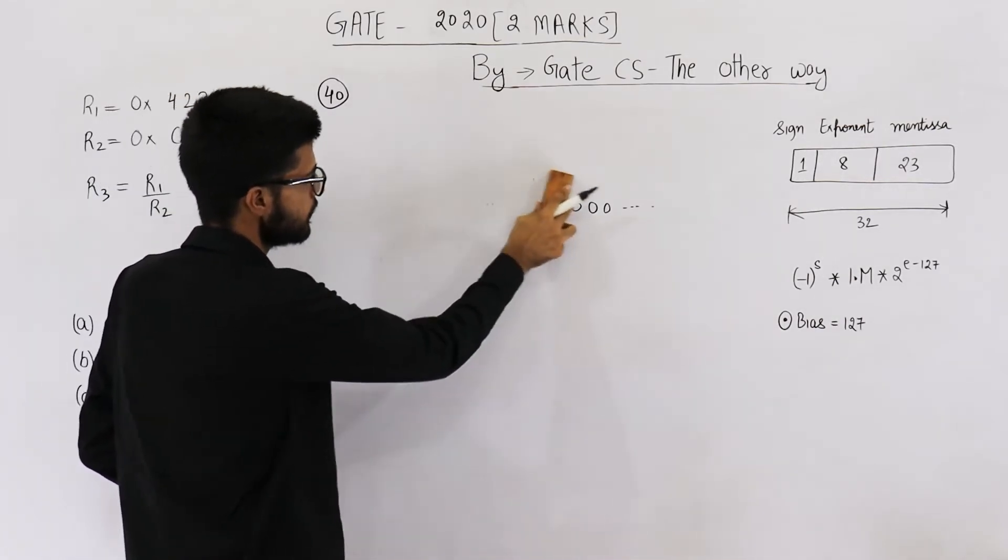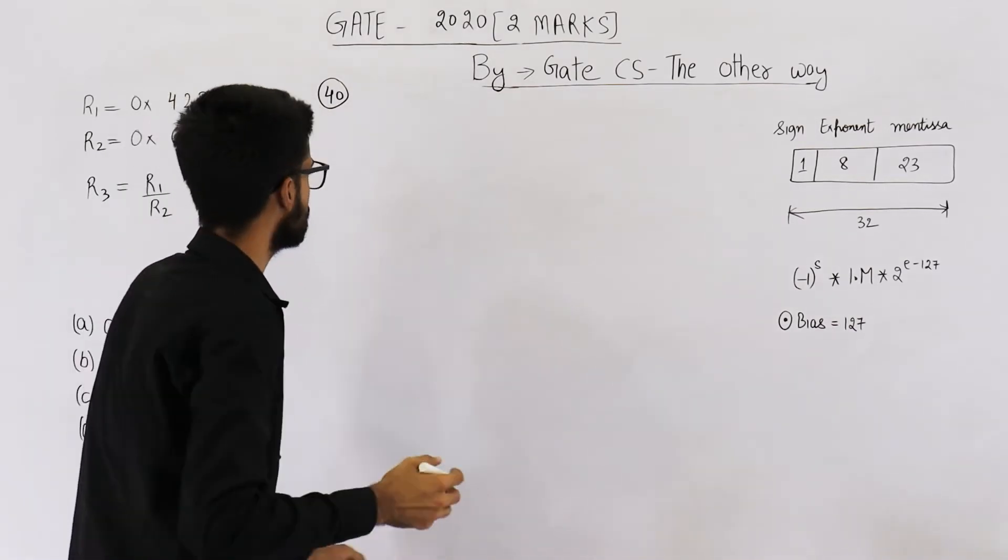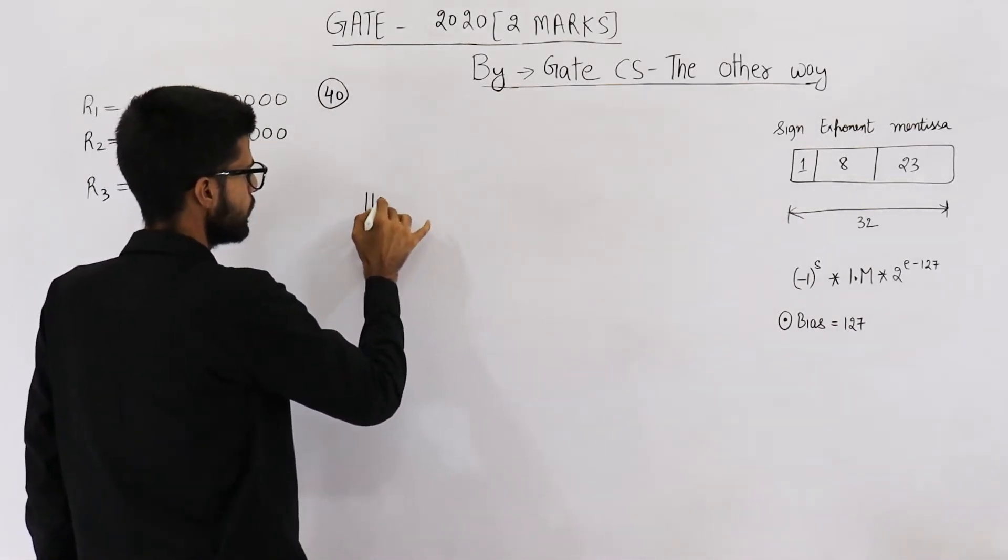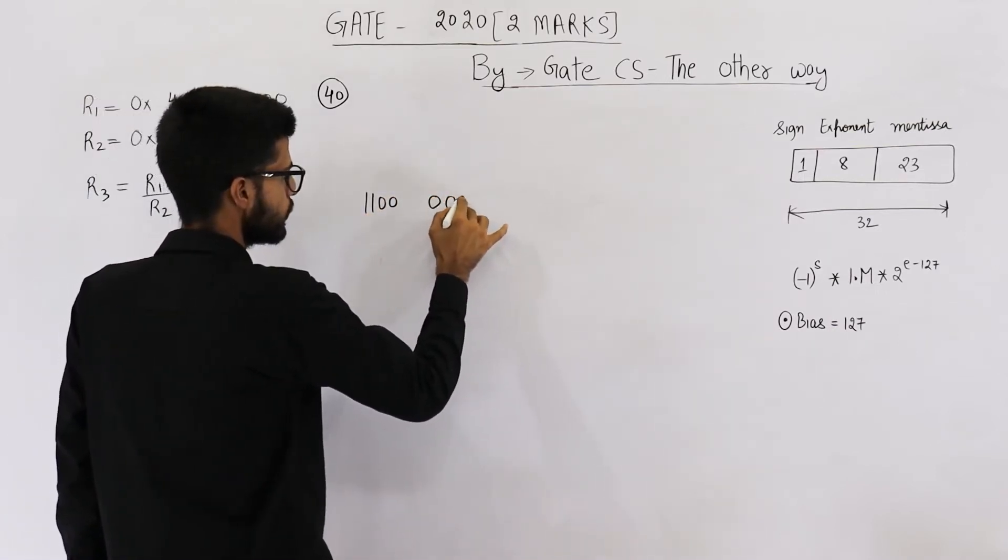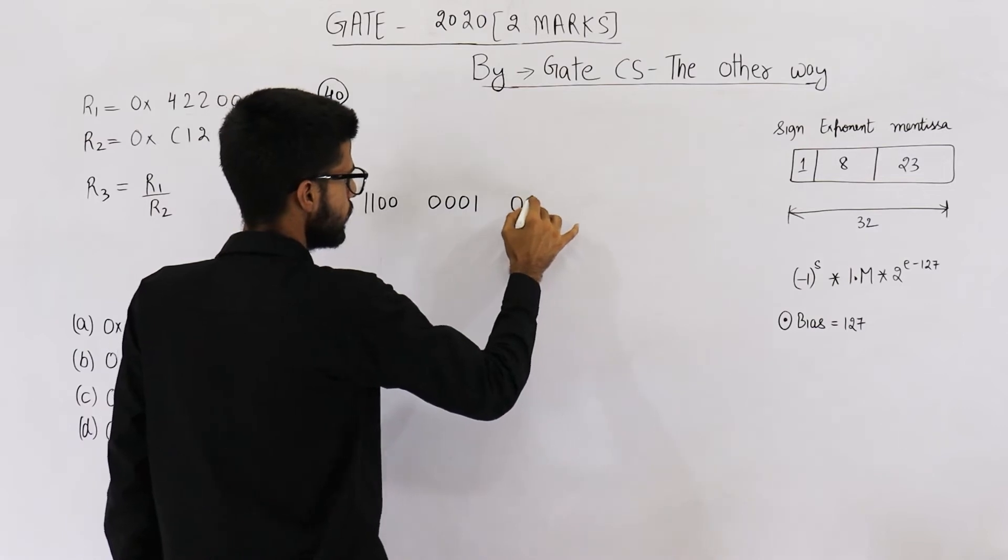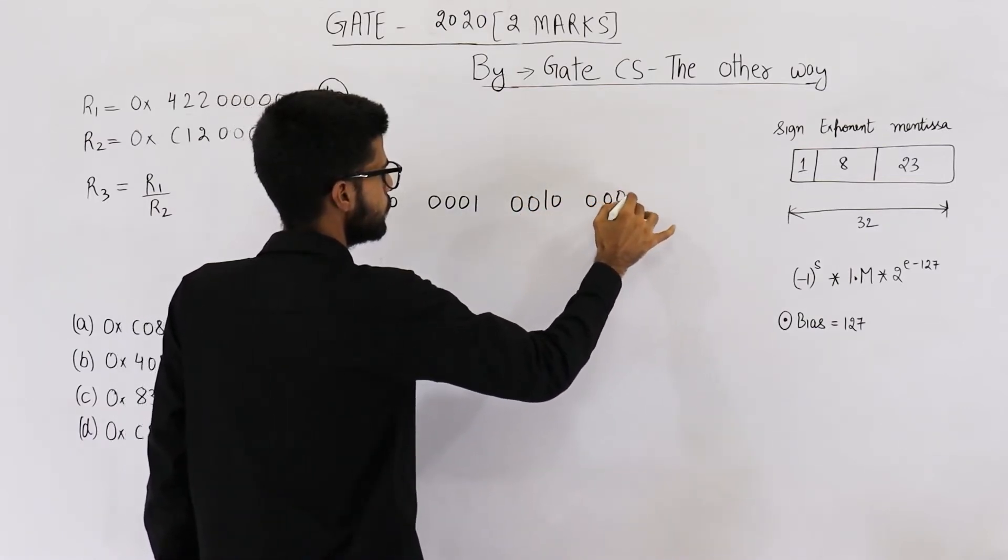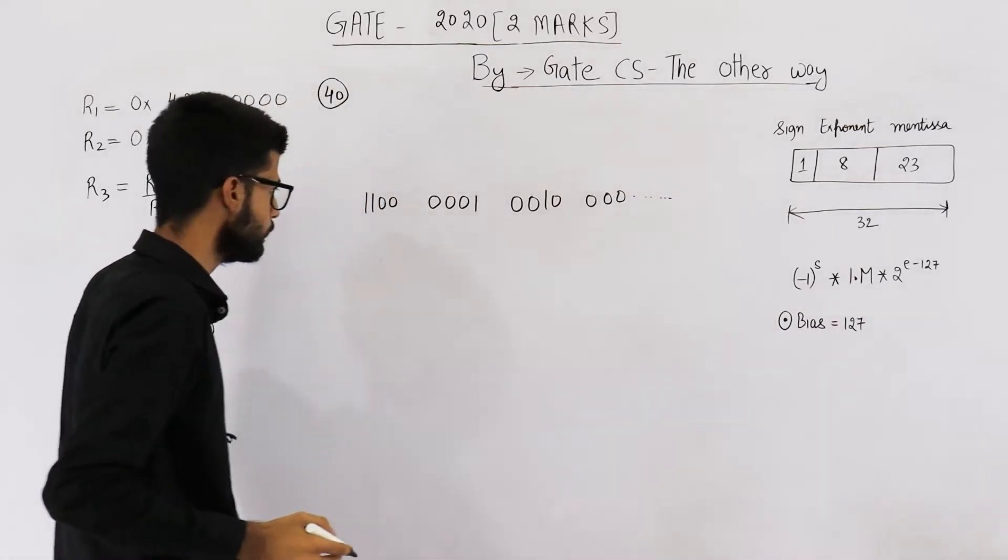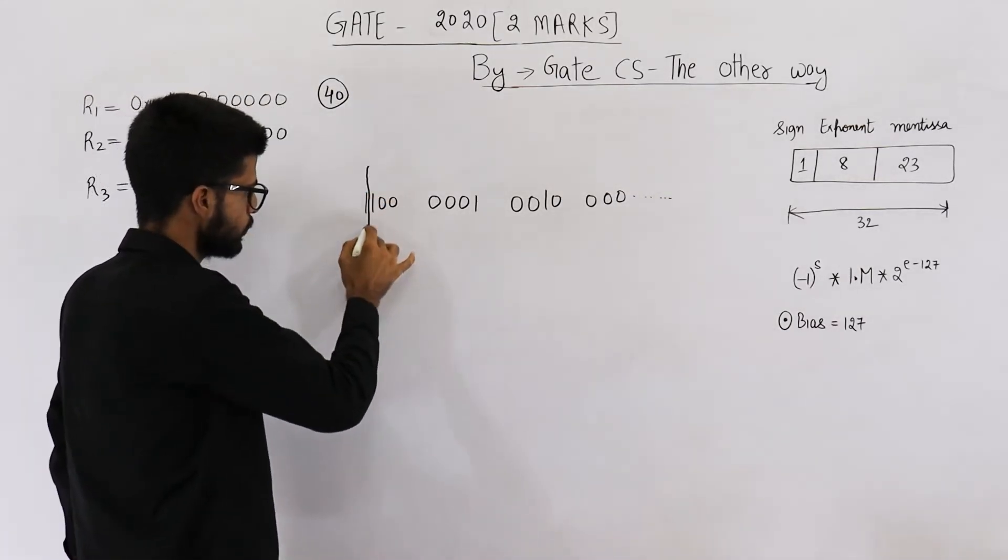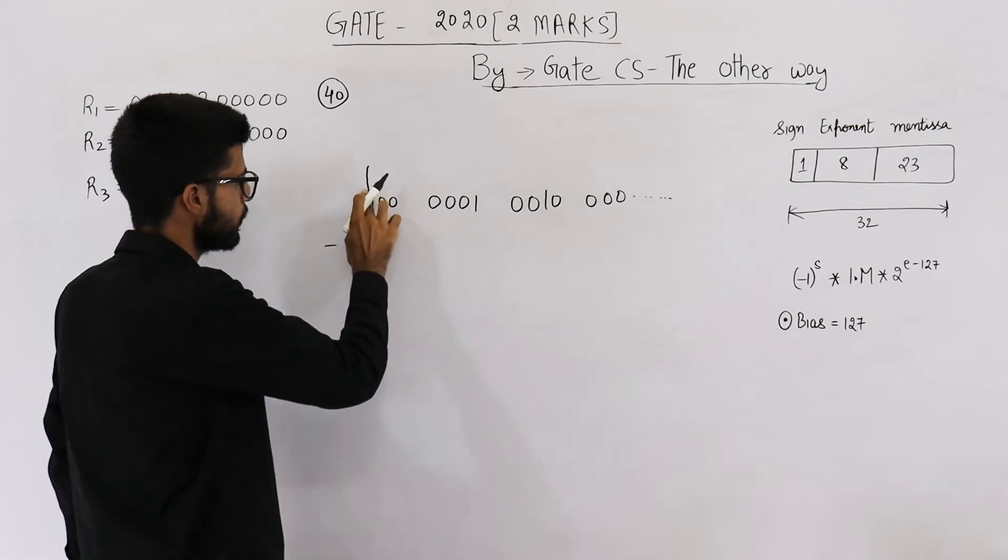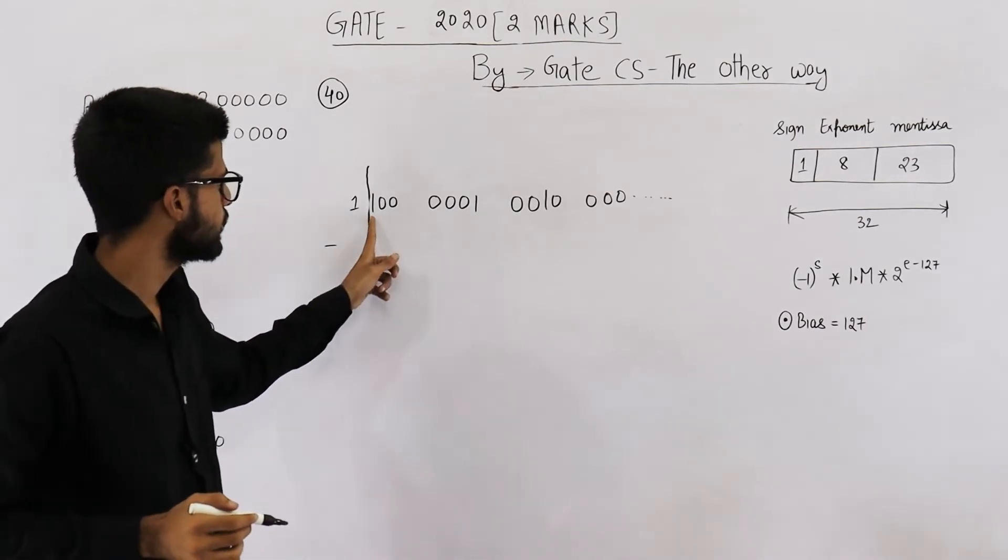R2 contains 0xC1200000. So C is 12, that means 1100. 1 is 0001, 2 is 0010, and then all zeros. Now first bit is 1, that means it is some negative number. So sign bit is 1, it is some negative number.